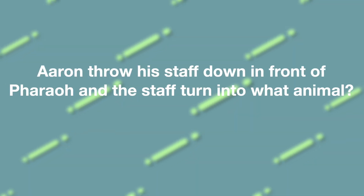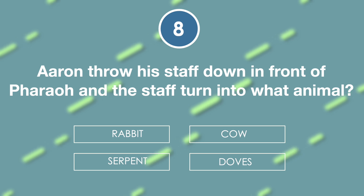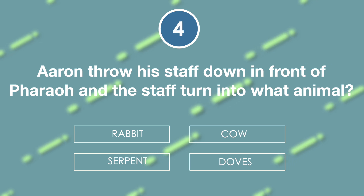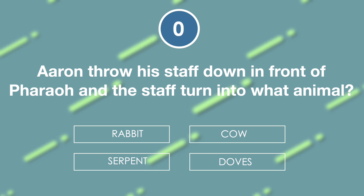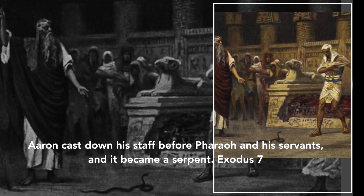Aaron threw his staff down in front of Pharaoh and the staff turned into what animal? Is it rabbit, cow, serpent, or doves? The answer is serpent. 'Aaron cast down his staff before Pharaoh and his servants, and it became a serpent.' Exodus 7.